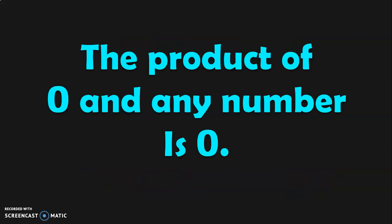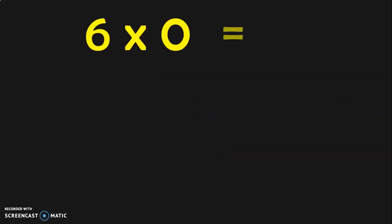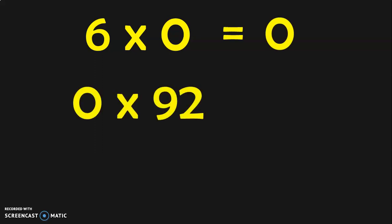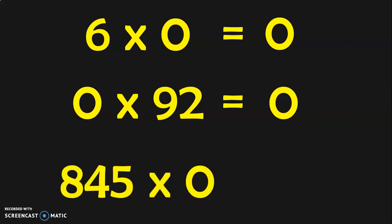Let us see the next property. The product of 0 and any number is 0. That is the speciality of 0 — when you multiply any number by 0 or 0 by any number, you get the answer 0. For example, 6 into 0 is 0; 0 into 92 is also 0 because 0 groups of 92 items obviously gives you 0. So 845 into 0 will also give you 0.